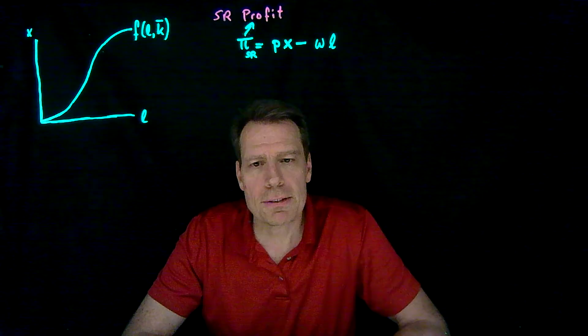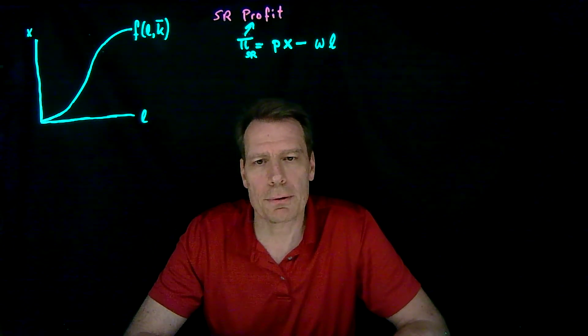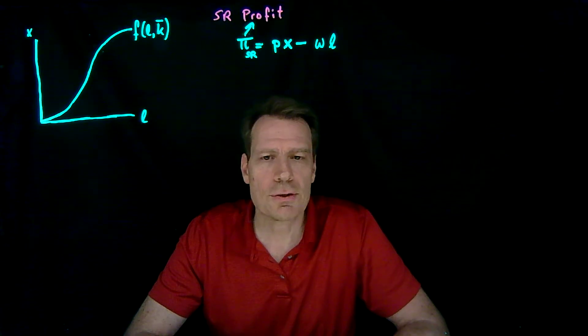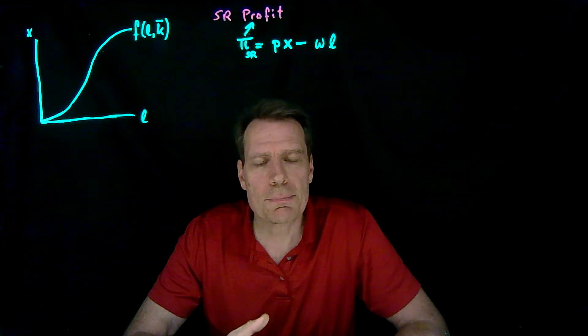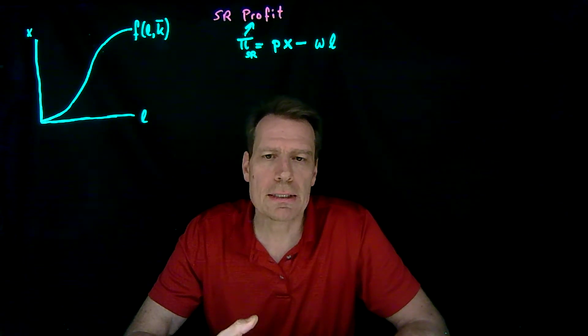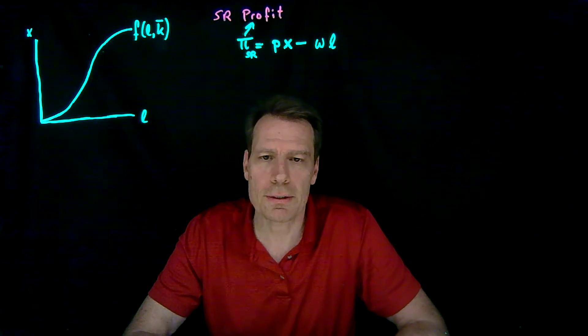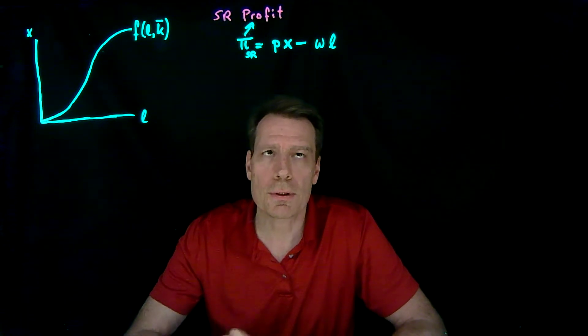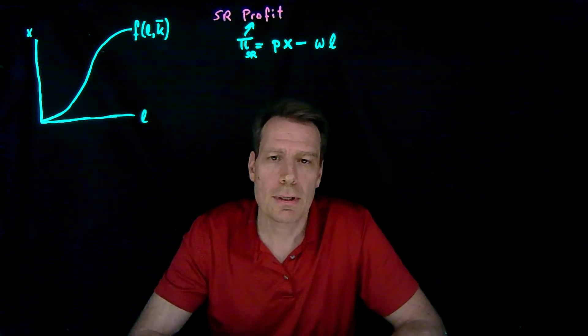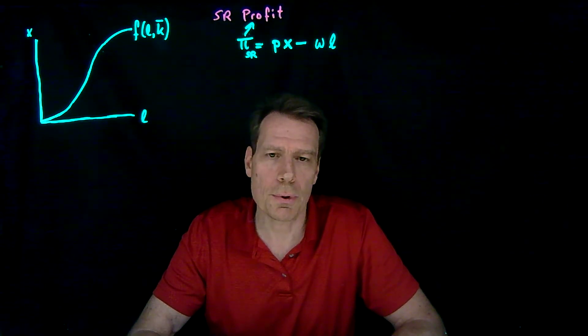Notice that we don't include the expense on the fixed level of capital that you incur. That's because that expense is already a settled issue. You've already chosen how much capital to have. You can't change that, regardless of how much you produce in the short run. So the expense on capital is not a real economic cost for short-run production. You have to pay it regardless. The only cost that's relevant in the short run is your labor cost, because that's a cost that you can change by hiring more or fewer workers.